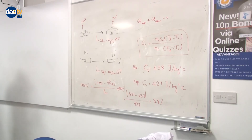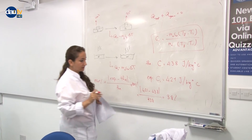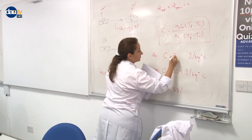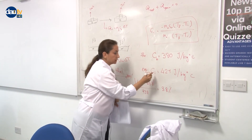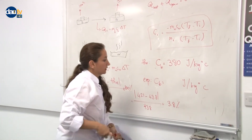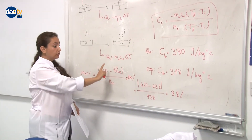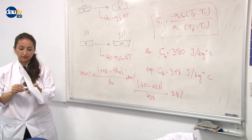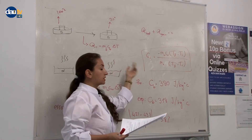Now we define the specific heat capacity of brass. As written in the manual, the theoretical value is 380 J/(kg·K). Substitute your experimental value and theoretical value into the percentage error formula — divided by theoretical times 100 — to define the percentage error and fill the last table.